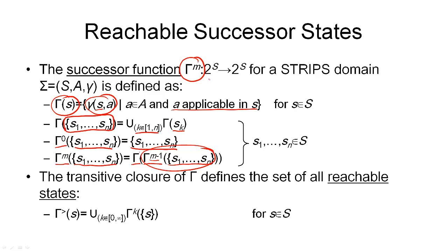We've defined the function gamma M, which maps a set of states to another set of states, namely exactly those states that are reachable in M steps from any one of the states given in the input.